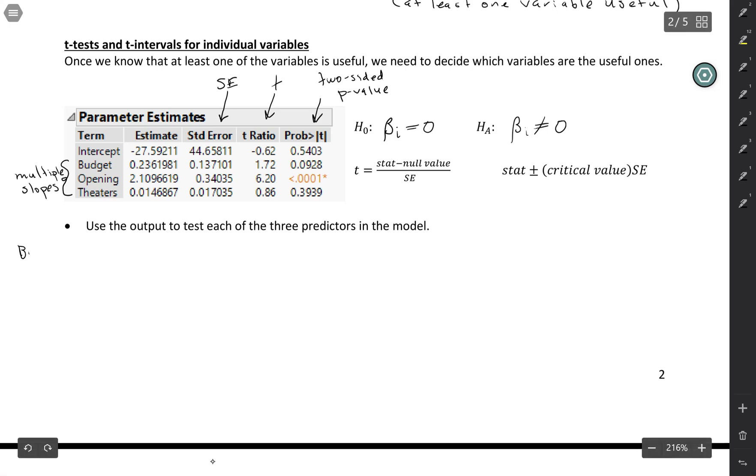So let's start with budget. We'll go through this one kind of in detail. So first of all, how do they get that t-statistic? So remember, the t-statistic is the slope minus the null hypothesis value, which is zero, divided by the standard error. So if we take the slope, 0.2362, if I'm rounding to four decimal places, and then divide it by the standard error, 0.1371, that's where we get that t-statistic of 1.72.